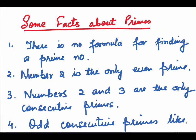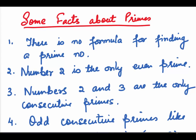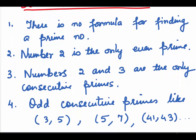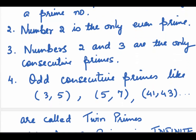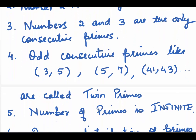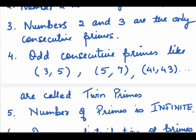Let's now look at some facts about prime numbers. First of all, there is no formula for finding a prime number like we have for Fibonacci numbers. Number 2 is the only even prime and you have to remember 1 is not a prime number. Numbers 2 and 3 are the only consecutive primes. Odd consecutive primes like 3 and 5, 5 and 7, 41 and 43, where the difference is 2, are known as twin primes.